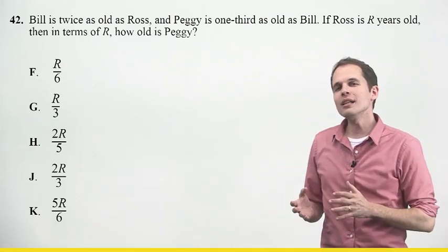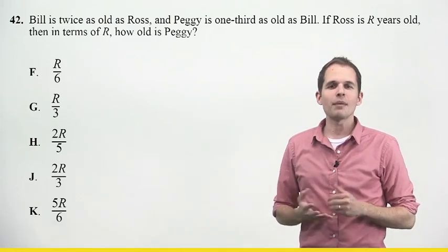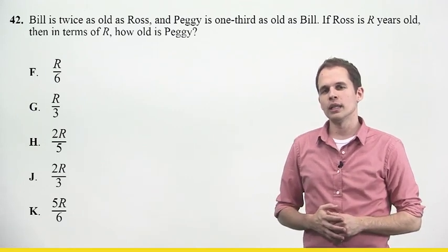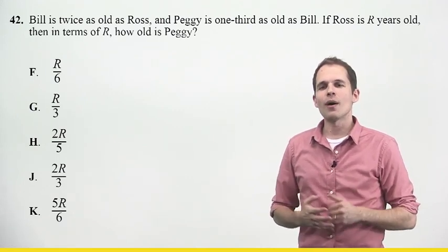Let's read the question. It says, Bill is twice as old as Ross, and Peggy is one-third as old as Bill. If Ross is r years old, then in terms of r, how old is Peggy?